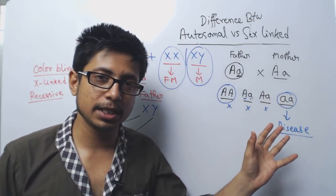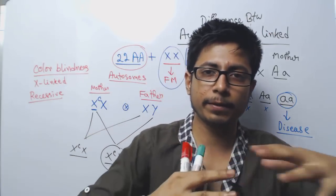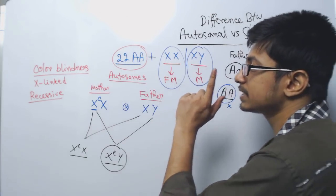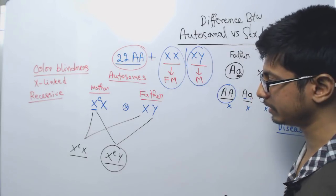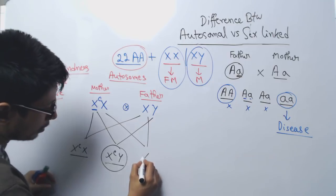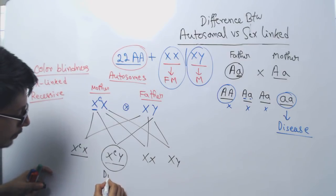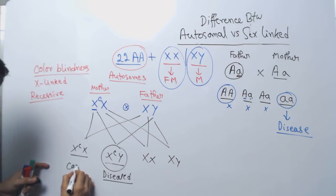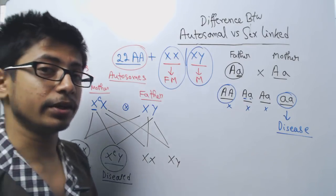While in autosomal inheritance there is no sex specificity — it can affect males and females at roughly the same ratio throughout the population. But in the case of sex-linked inheritance, males are much more predominant in getting the disease. The other combinations from this cross produce a normal male and a carrier female, because that carrier girl can spread colour blindness to the next generations.